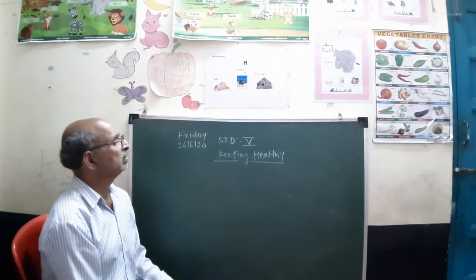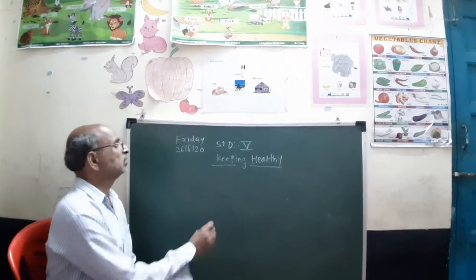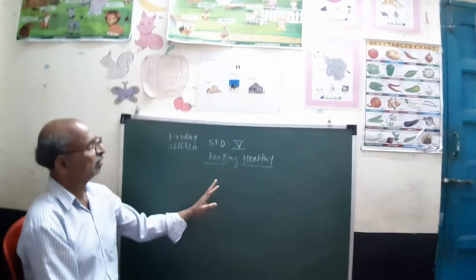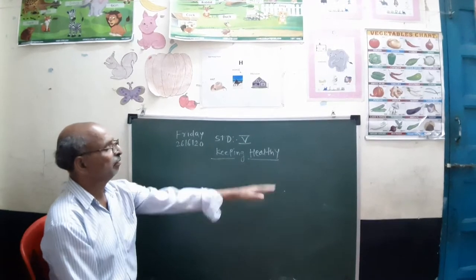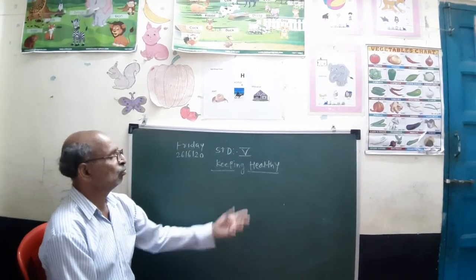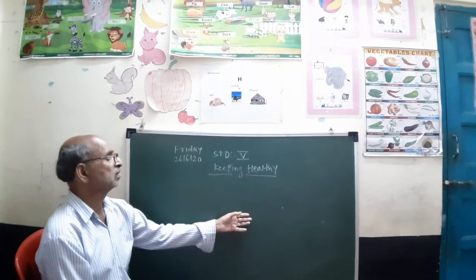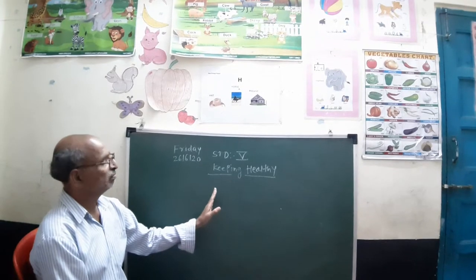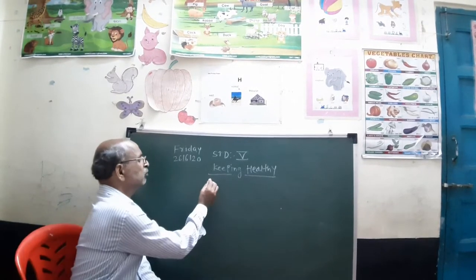Students, in the last lecture we have seen the different constituents of food. The constituents are carbohydrates, proteins, vitamins, minerals, roughage, and water. These are not nutrients but they are required for us. The main constituents are carbohydrates, fats, and proteins.